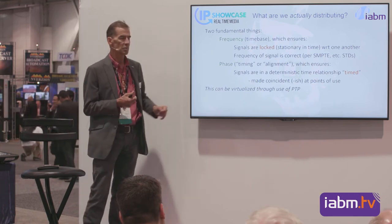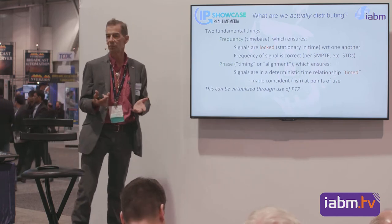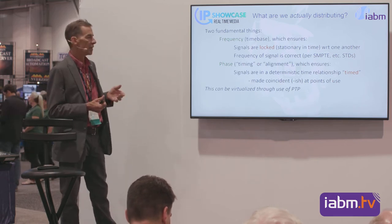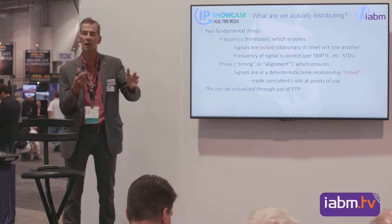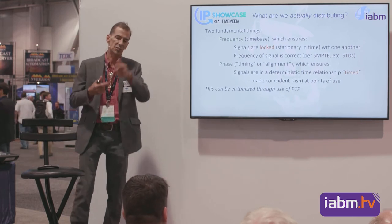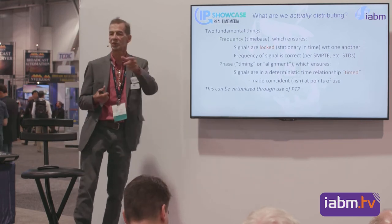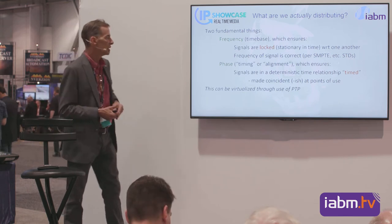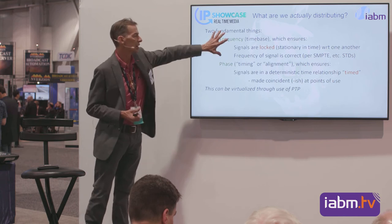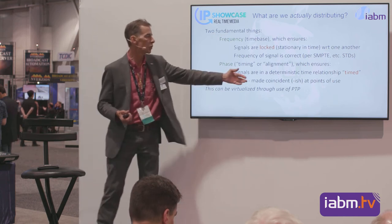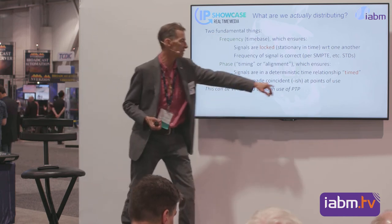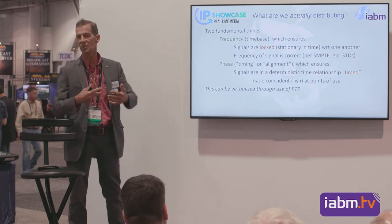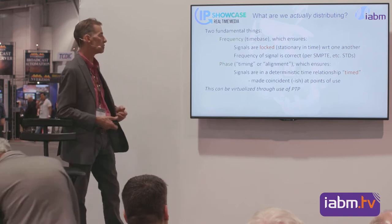The other thing we transport is phase. The vertical part of color black transports the vertical timing, which is the biggest element in video — the next frame has a vertical, and the next, it's just modulo one vertical. Timecode takes care of knowing which vertical is which. So we lock signals together, phase them, and make a coincidence when we go to use them. Today we have auto timing buffers that can tolerate a couple of lines of slop, but if you get them in the window, the machine will line them up.